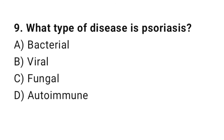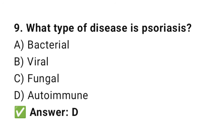Q9: What type of disease is psoriasis? The right answer is D, autoimmune. Psoriasis is an autoimmune disease causing rapid skin cell turnover.